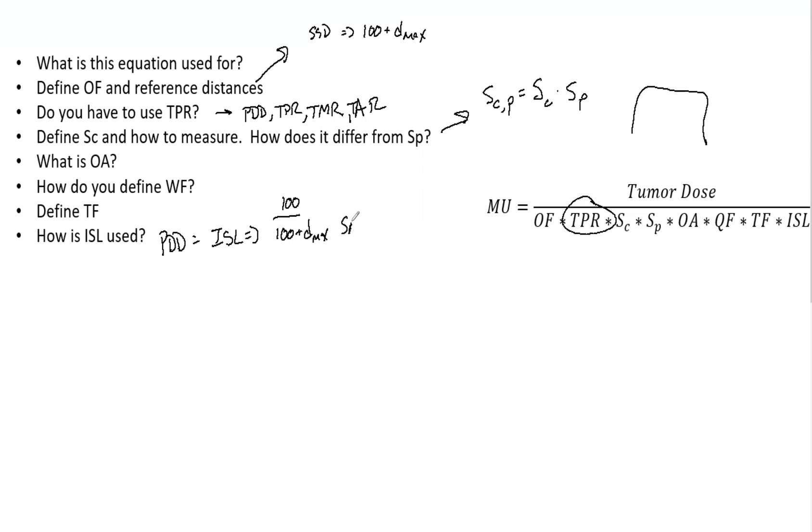Now, that's if we have the SAD, if that's how it is. So if we're using PDDs, but we have, we're using the SSD method, then our inverse square law is just equal to one, which is really nice.